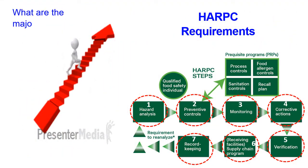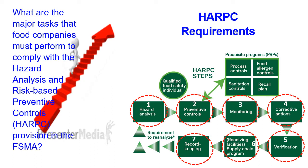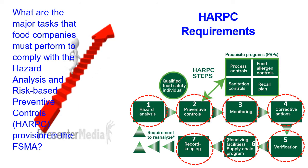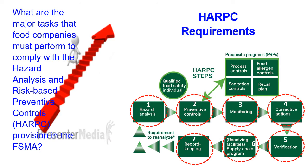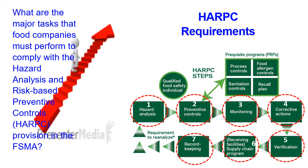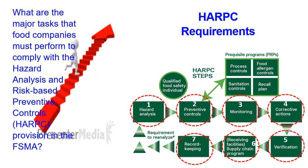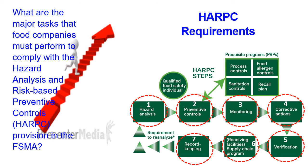HARPC requirements — what are the major tasks a food company must perform to comply with the Hazard Analysis and Risk-Based Preventive Controls provision in the Food Safety Modernization Act? The steps of HARPC are: Step 1, Hazard Analysis; Step 2, Preventive Controls, which include prerequisite programs like Process Controls, Food Allergen Controls, Sanitation Controls, and Recall Plan; Step 3, Monitoring; Step 4, Corrective Actions; Step 5, Verification; Step 6, Receiving Controls or Supply Chain Program; Step 7, Record Keeping; and the system must also be reanalyzed periodically.